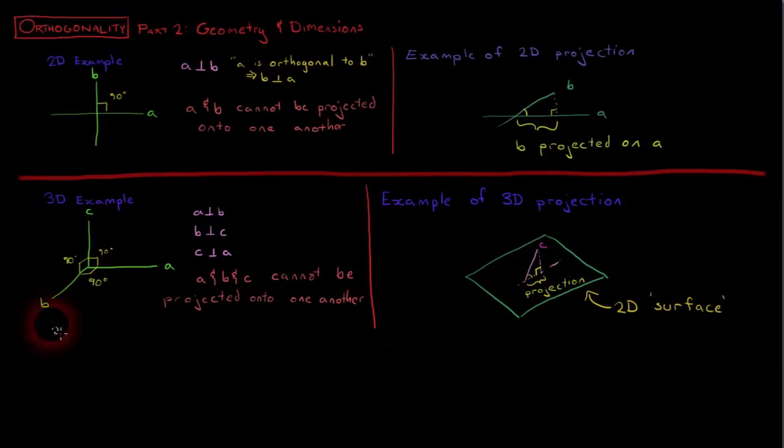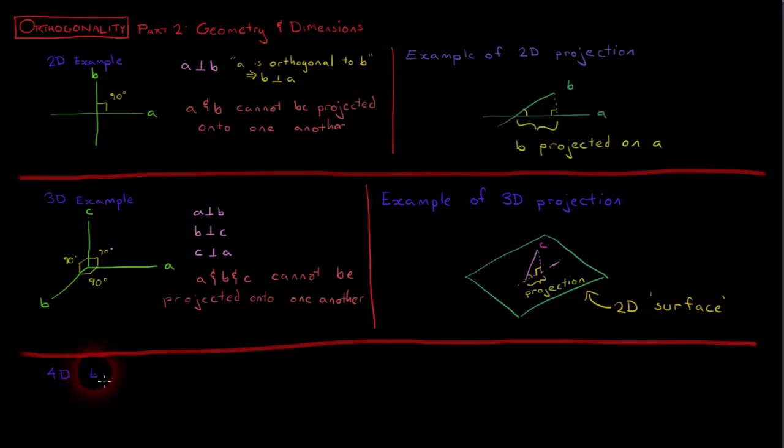Anything beyond three dimensions is much more difficult to visualize, although there are definitely methods employed, such as color coding or time lapses. In fact, we say that there are an infinite number of orthogonal dimensions, and we use that concept quite often in the analysis of stochastic processes.